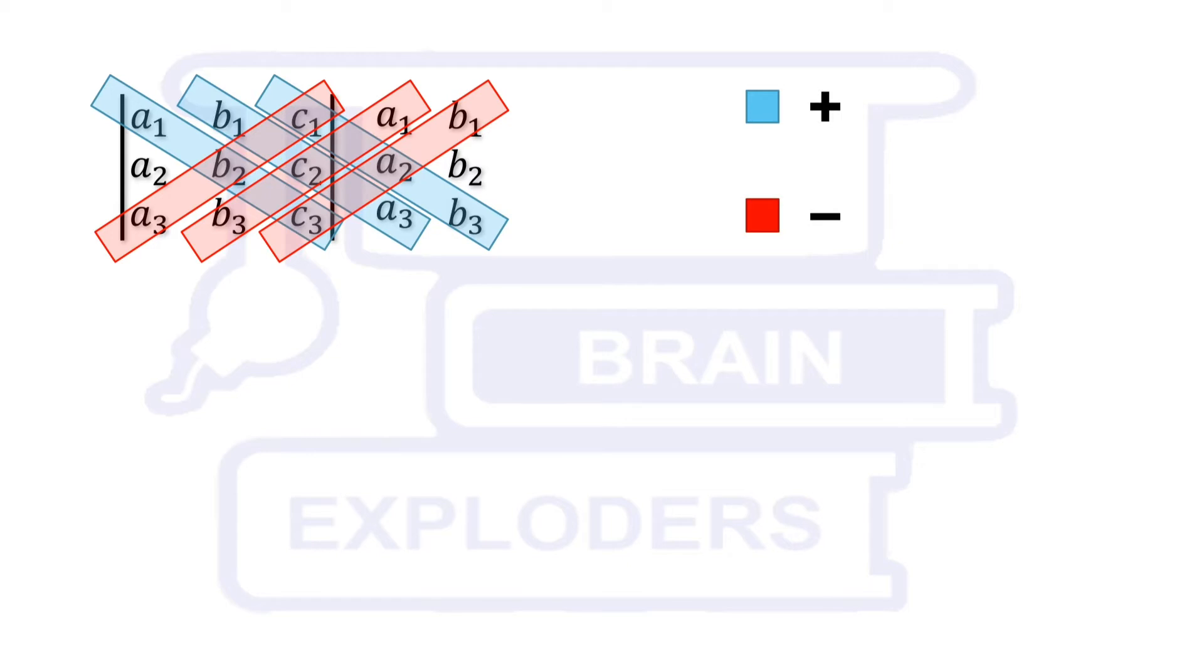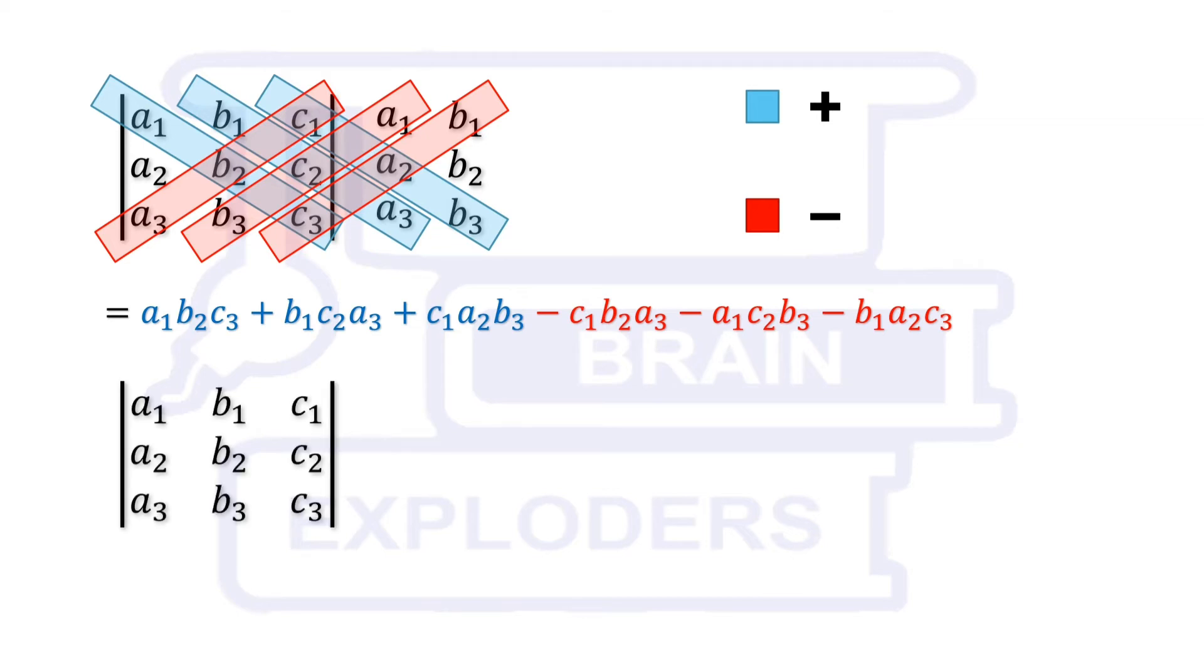Multiply all the three numbers which are in the same diagonal. Put a positive sign before the products of blue diagonals and negative sign before the products of red diagonals. Rest is the calculation. In this way we obtain the value of this determinant.